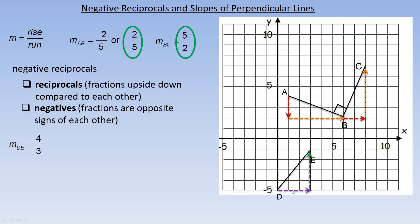To find a line segment perpendicular to DE, we switch the rise and the run. Instead of going up 4, I go right 4, and instead of a run of 3, I go down 3. This perpendicular line segment is FG. FG has a rise of down 3 and a run of 4, so its slope is negative 3 quarters.